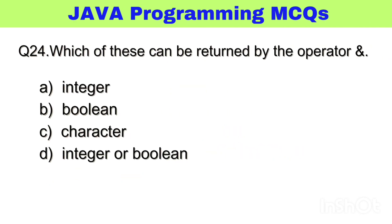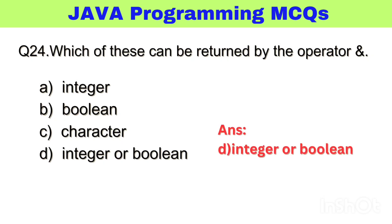Question number 24. Which of these can be written by the & operator? The right answer, option D: integer or boolean.